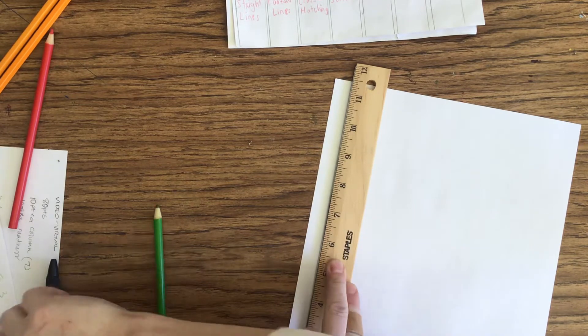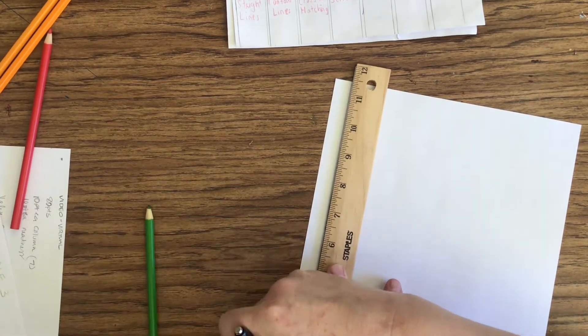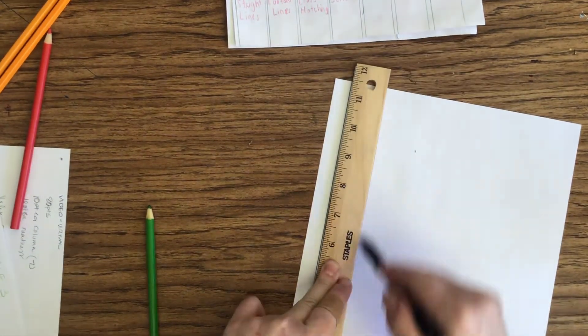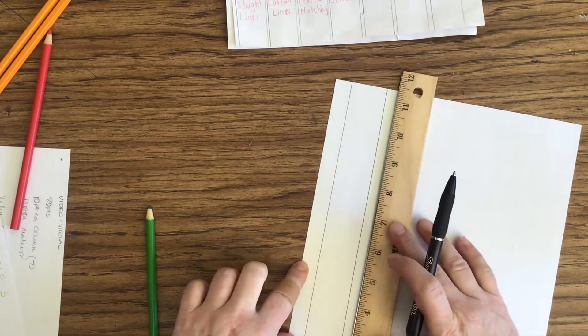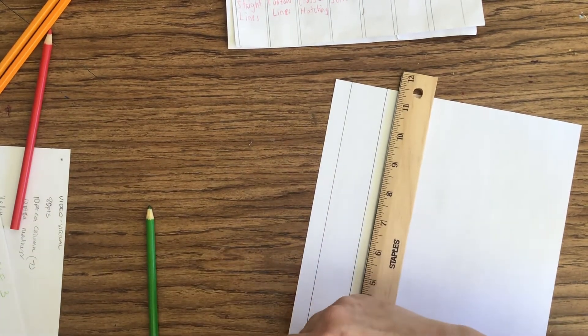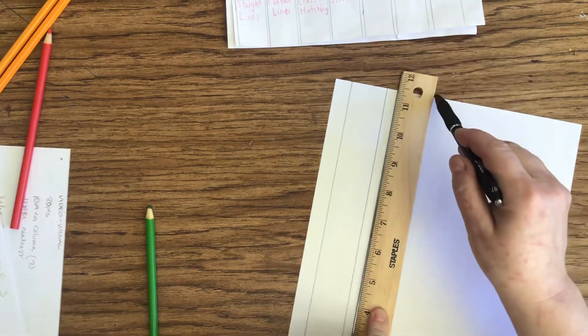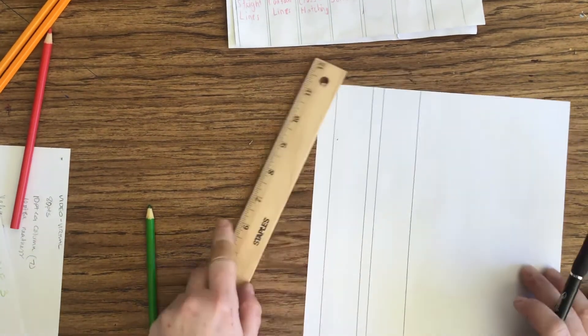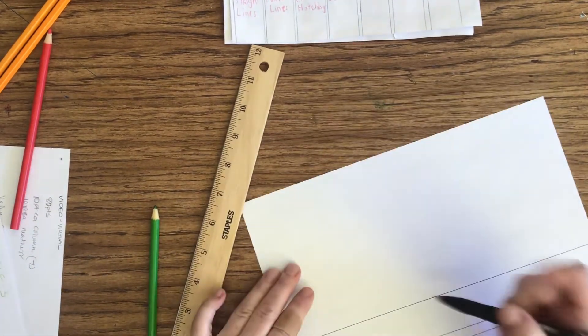So I'm going to draw my columns this time in pen, just because it might be easier for you to see. And I didn't do that in the last one, so I thought I would do something a little different. So this is going to be value scale four.